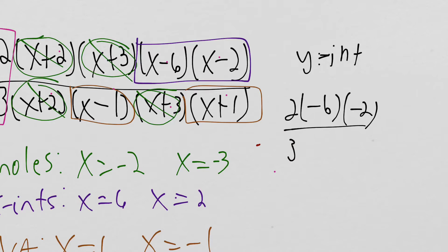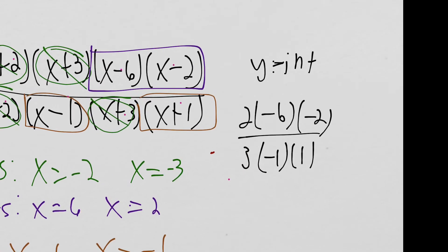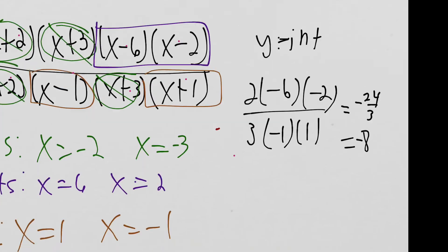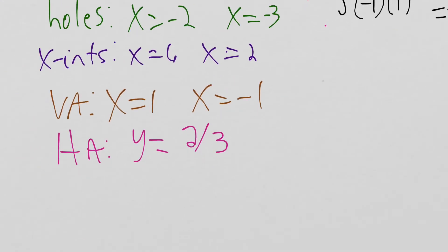Over 3 times 0 minus 1 is negative 1. 0 plus 1 is positive 1. So that's going to give us 24 over negative 3. So negative 24 over 3, which is equal to negative 8. So we have a y intercept at 0 comma negative 8.